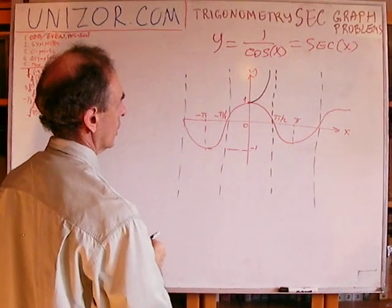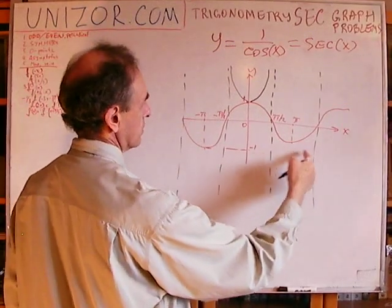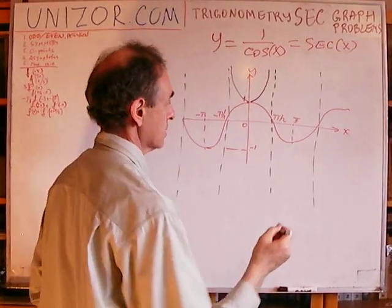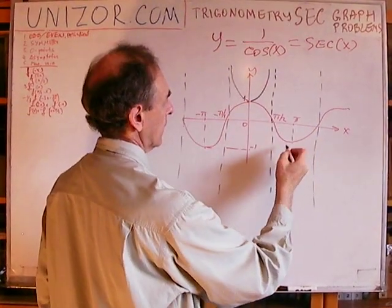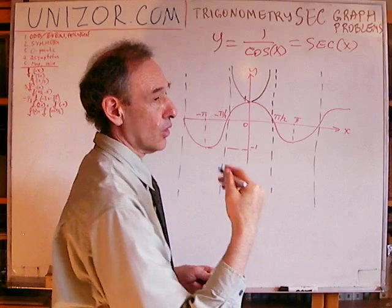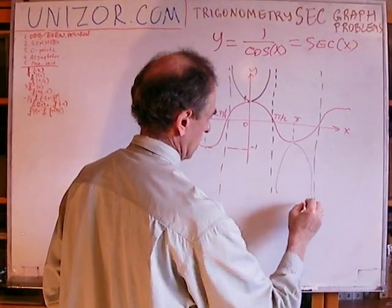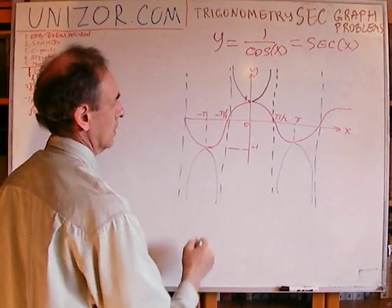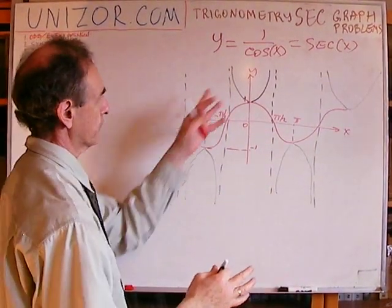The same thing goes on the other side. In the interval from -π/2 to 0, everything is similar except it's negative. From -1, invert to -1 is -1. Then, since cosine goes to 0 being negative, 1 over cosine goes to negative infinity. And the same pattern repeats on the positive side. So that's basically the graph of secant — the black curves.